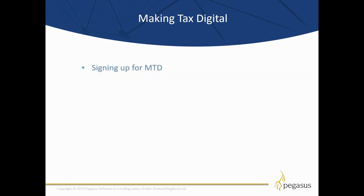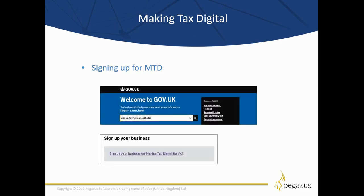Before you can start using Making Tax Digital you will need to sign up with HMRC. You should only sign up for Making Tax Digital once you've submitted your final VAT return using the existing system, and prior to submitting your next VAT return under the new MTD rules. First of all, go to the government website gov.uk and enter into their search engine 'sign up for using Making Tax Digital'.